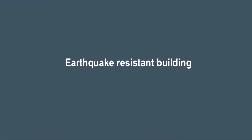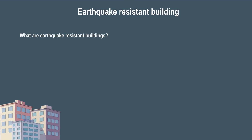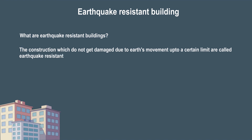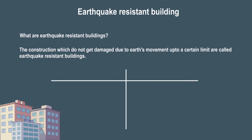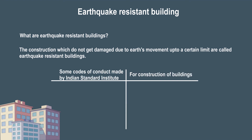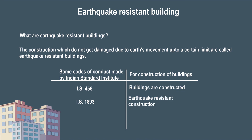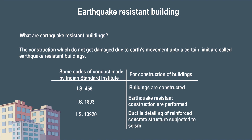Earthquake-resistant buildings: constructions which do not get damaged due to earth's movement up to a certain limit are called earthquake-resistant buildings. Advanced technology is used for these buildings. Some codes of conduct made by the Indian Standard Institute for construction include: IS 456 for building construction, IS 1893 for earthquake-resistant constructions, and IS 13920 for ductile detailing of reinforced concrete structures subjected to seismic forces.